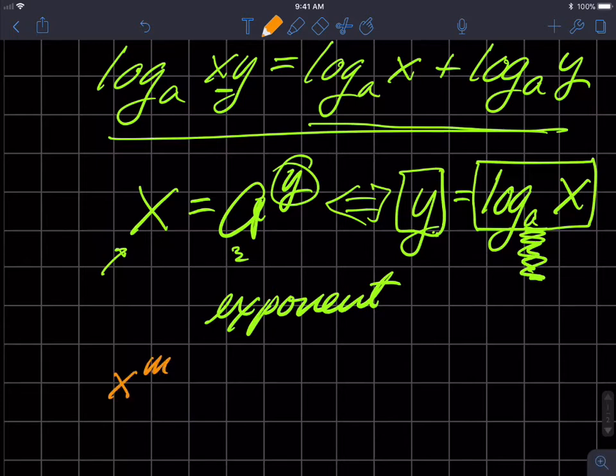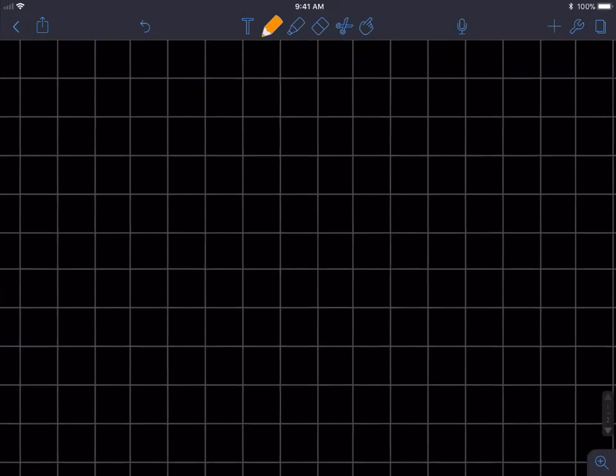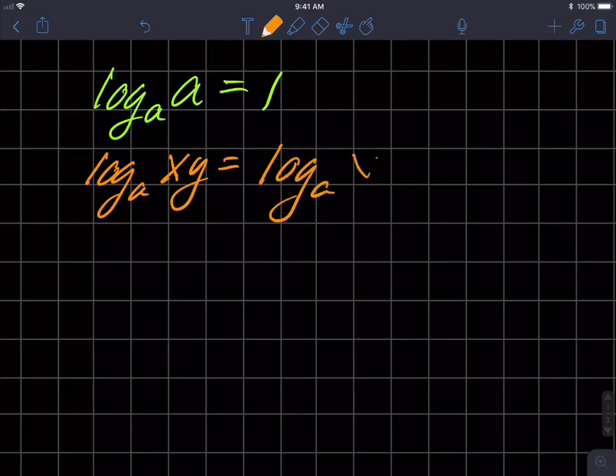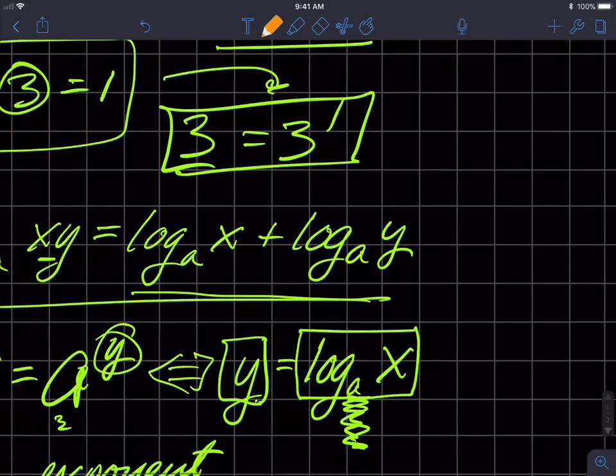So X to the M times X to the N, that's a product of two numbers, is equal to X to the M plus N. Look, we're adding the exponents when we're multiplying the numbers. So I'm going to rewrite that guy over here in our little summary list.